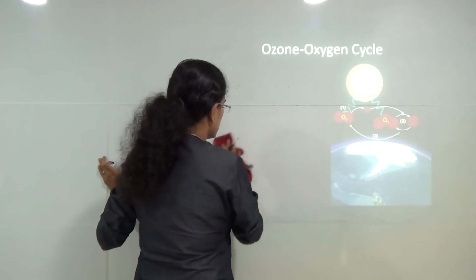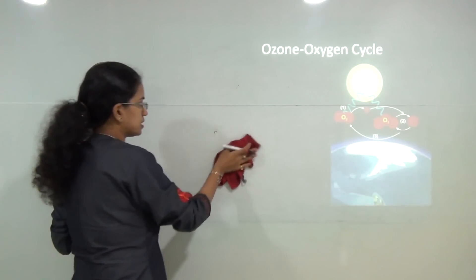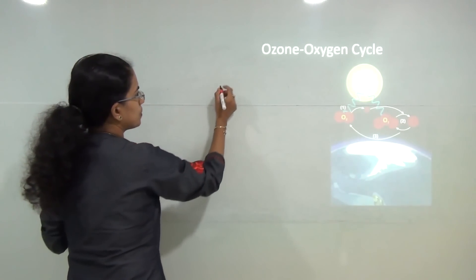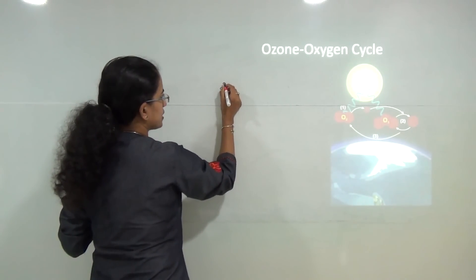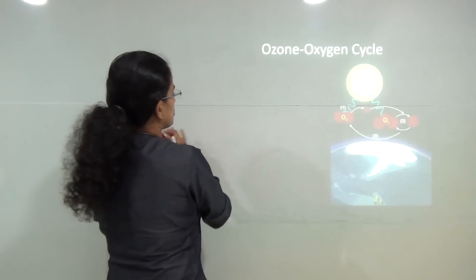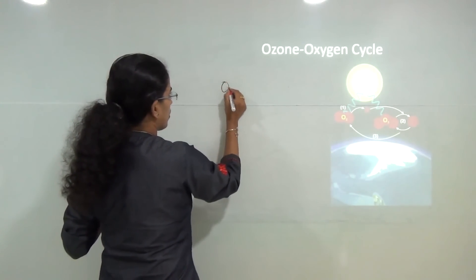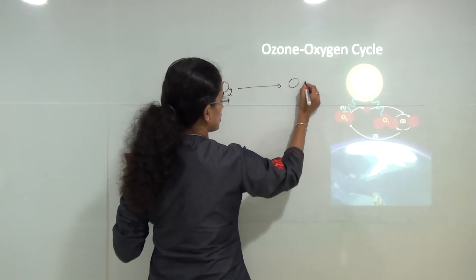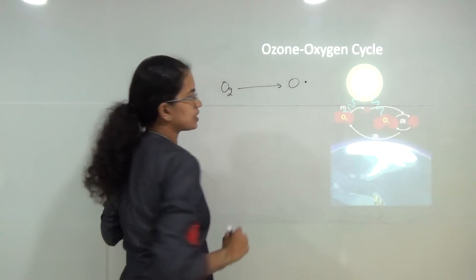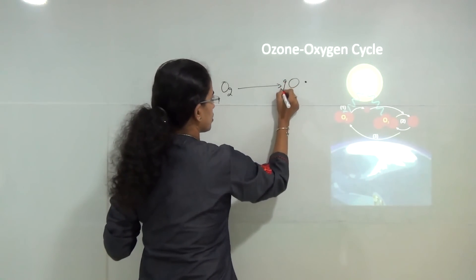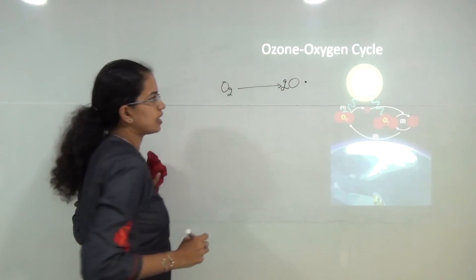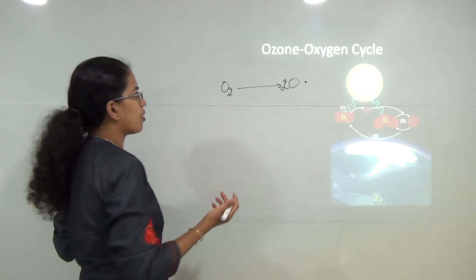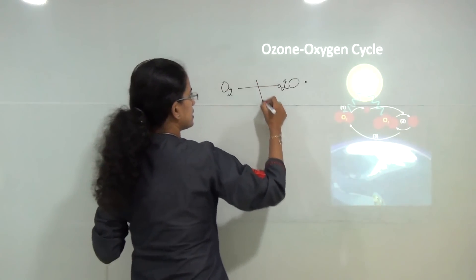So you have oxygen that breaks down into oxygen radicals. With each oxygen molecule breaking down, two oxygen radicals are formed, and in this process there is dissipation of heat in the form of kinetic energy.